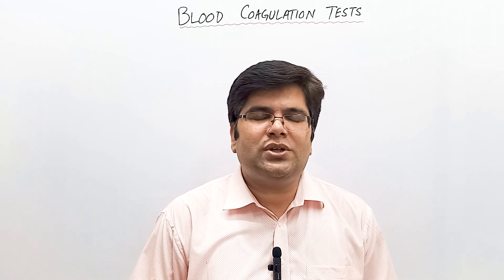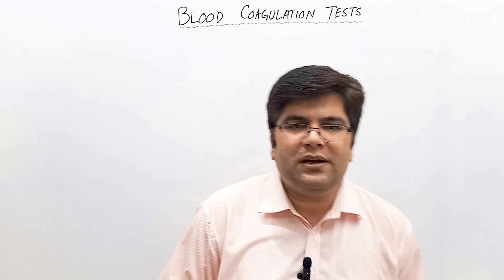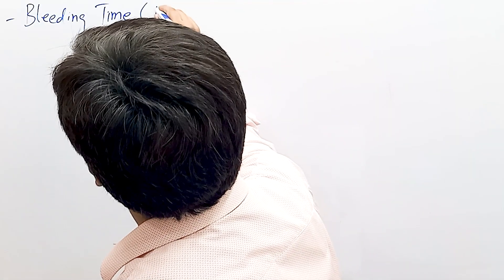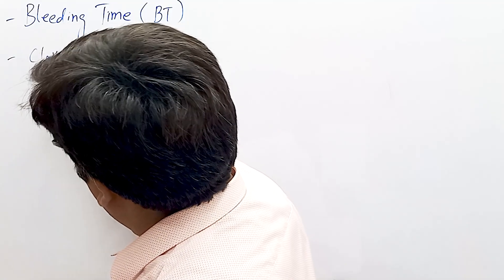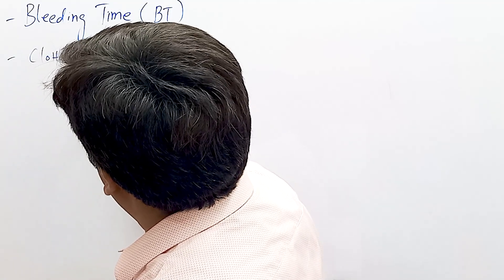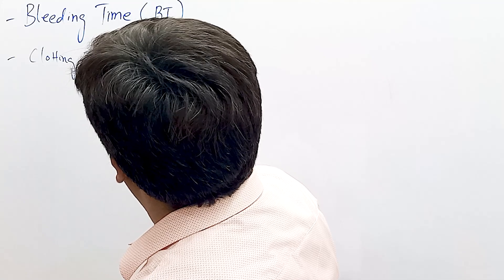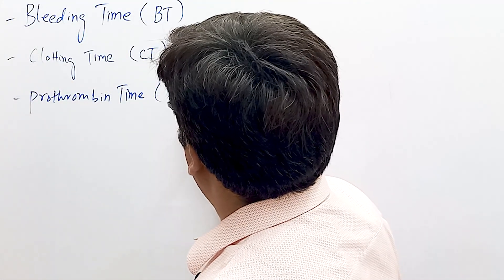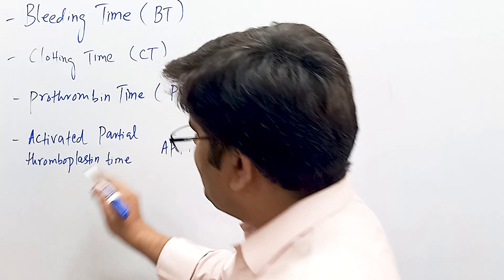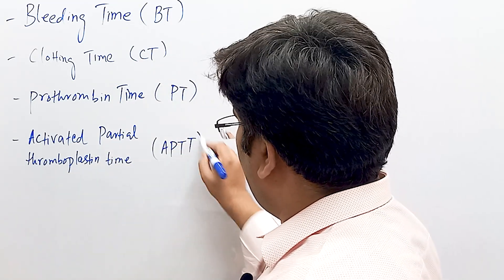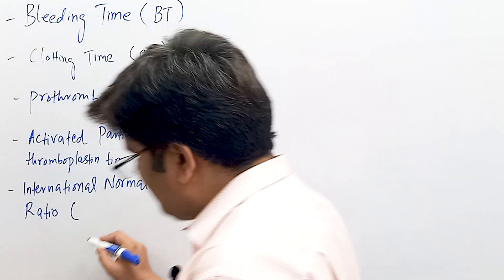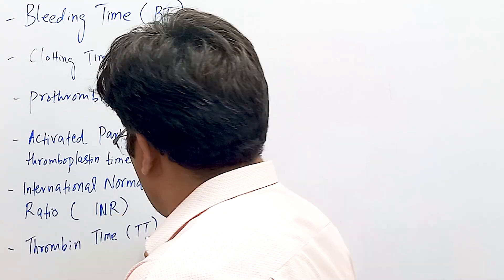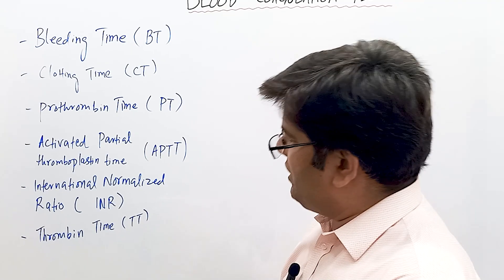Some commonly used blood coagulation tests are: bleeding time (BT), clotting time (CT), prothrombin time (PT), activated partial thromboplastin time (APTT), international normalized ratio (INR), and thrombin time (TT).